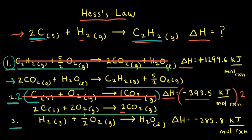Next, we look at equation three. There's one mole of hydrogen gas on the left side of the equation, which matches the original reaction, which also has one mole of hydrogen gas on the left side. So we don't need to do anything to equation three, and since we're not changing the equation, we're also not going to change the enthalpy — it stays at negative 285.8 kilojoules per mole of reaction.